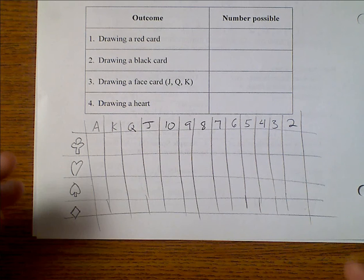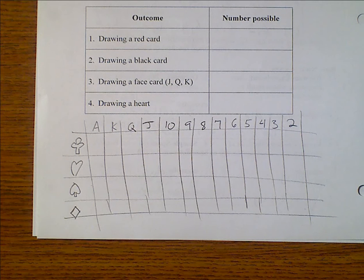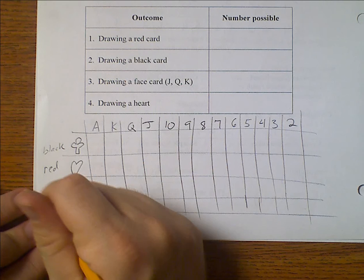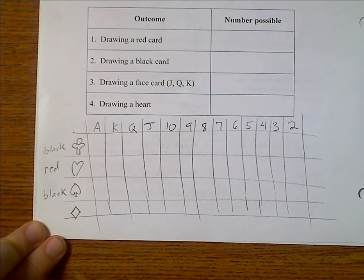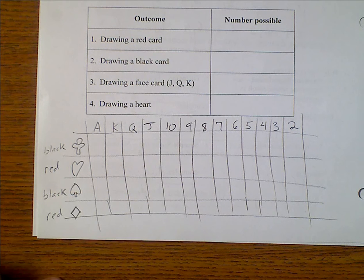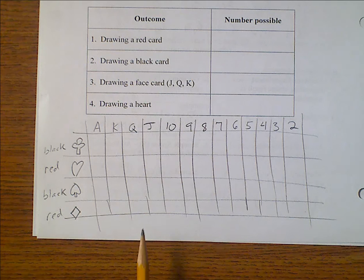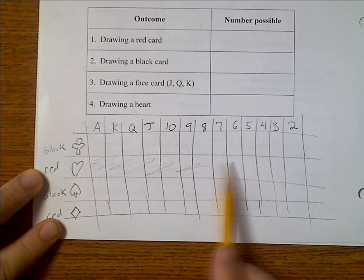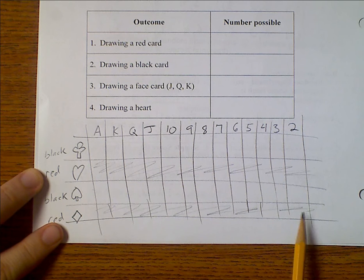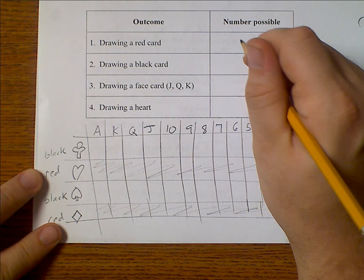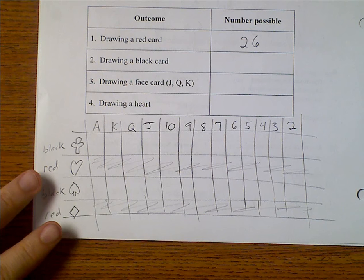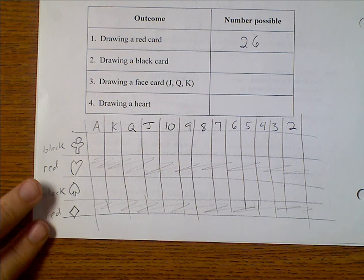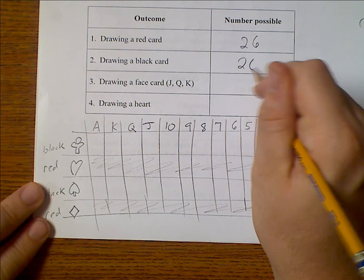And so those are all of our 52 cards. Now to further clarify, clubs are black, hearts are red, spades are black, and diamonds are red. So the probability of drawing a red card, well how many possible red cards are there? All of these are red and all of those are red. There are 13 here and 13 here. That makes a total possible of 26.